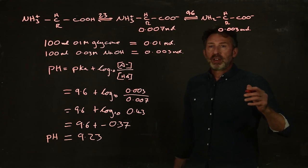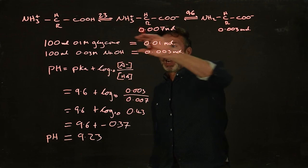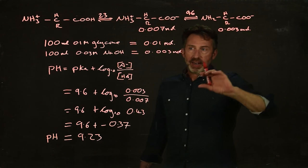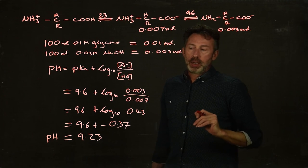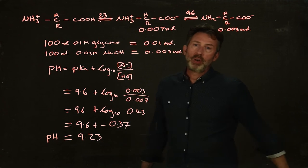What that means is if we take this much glycine and we add this much sodium hydroxide to it, the pH is going to be 9.23.